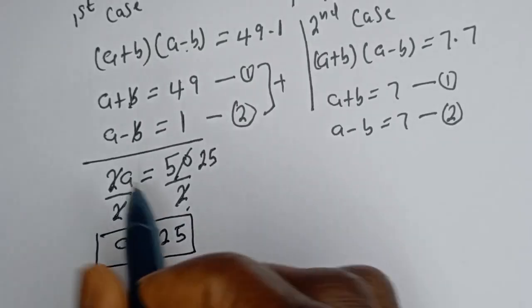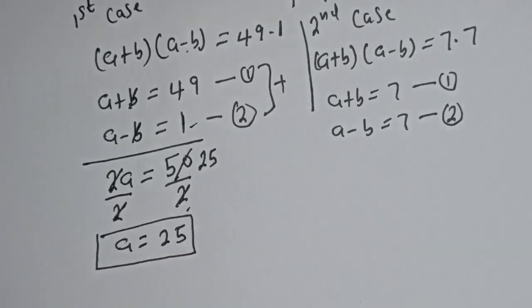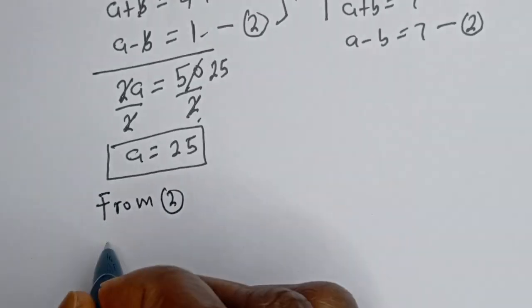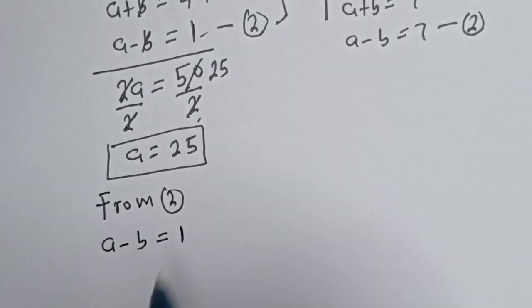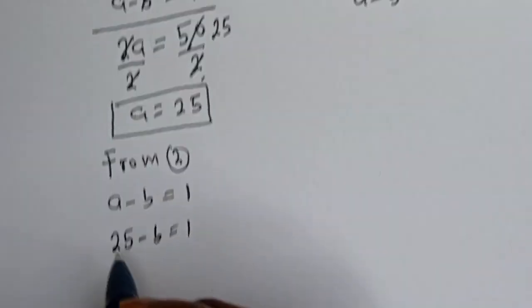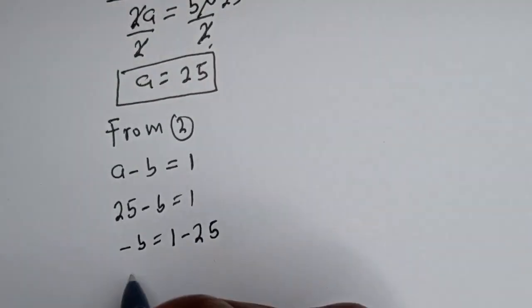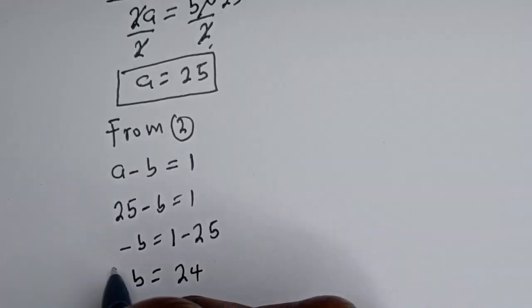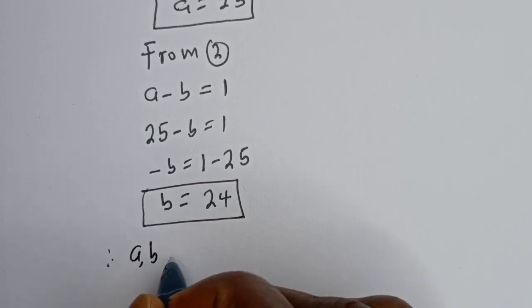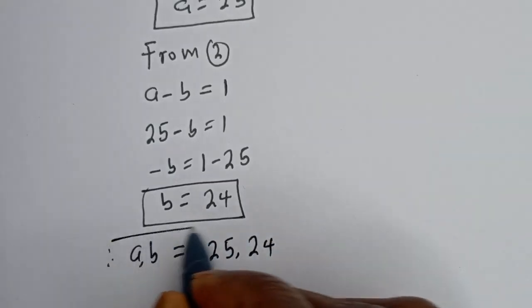Now we solve for B using equation 2: A minus B equals 1. When A equals 25, we get 25 minus B equals 1, so minus B equals 1 minus 25, giving B equals 24. Therefore, in the first case, A equals 25 and B equals 24.